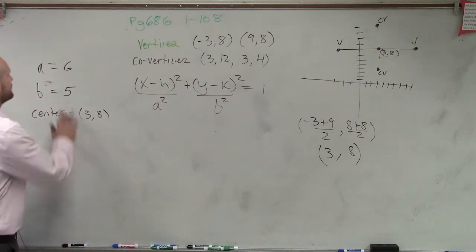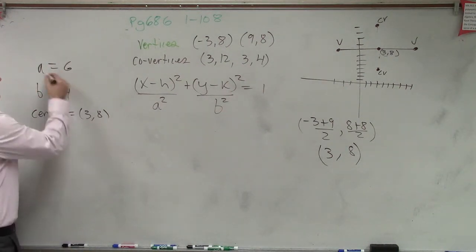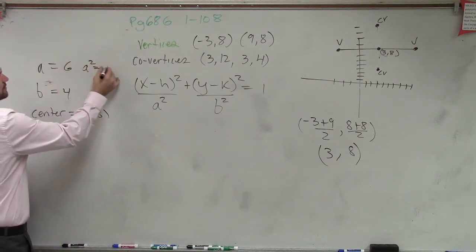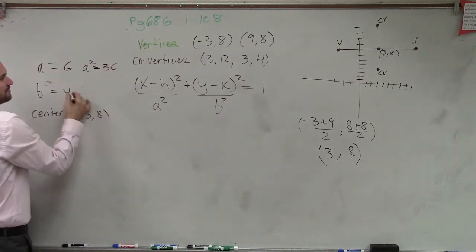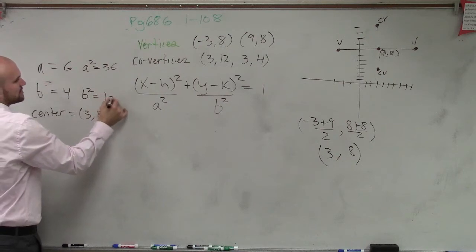So if a is 6, then a squared equals 36. If b is 4, b squared equals 16.